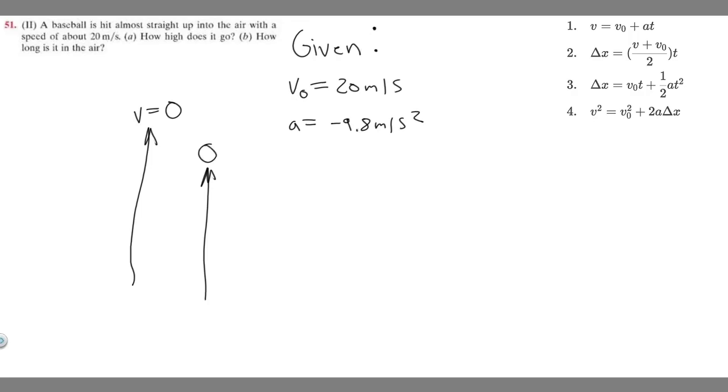So it's going to be zero. Our final velocity we can set to zero, and that's going to allow us to solve for the time it takes to reach its highest point in the air. That's basically what they're asking us for in A. You want to set v equal to zero, and then it's asking us how high does it go.